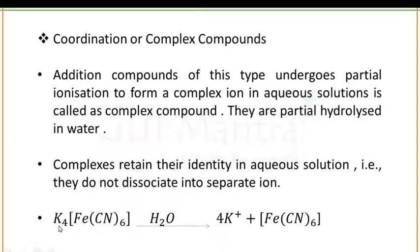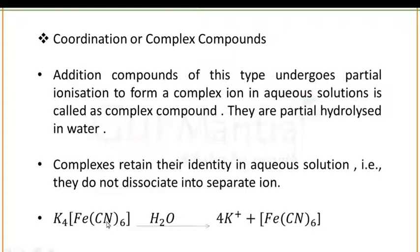For example, K4[Fe(CN)6] when reacting with H2O will dissociate into 4K+ and [Fe(CN)6]4-. In this case, the [Fe(CN)6]4- ion will not dissociate further.